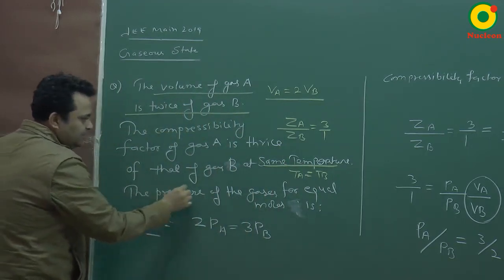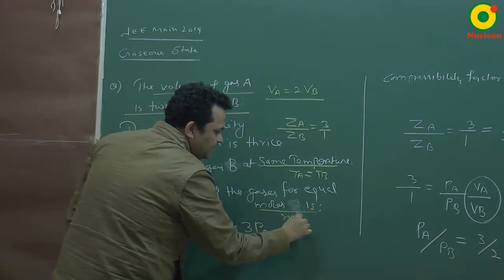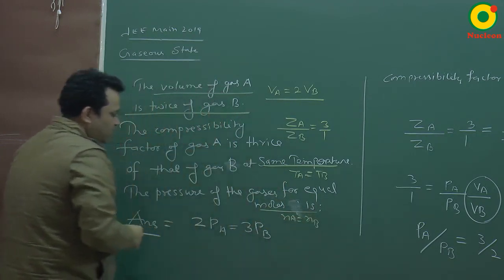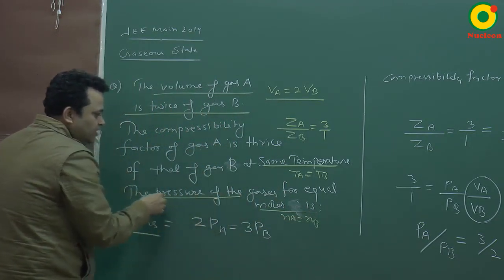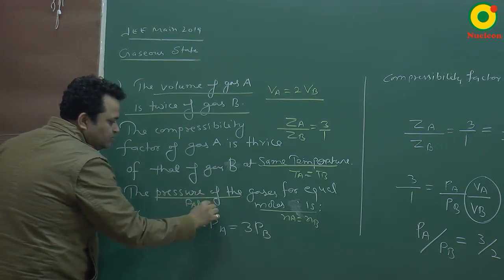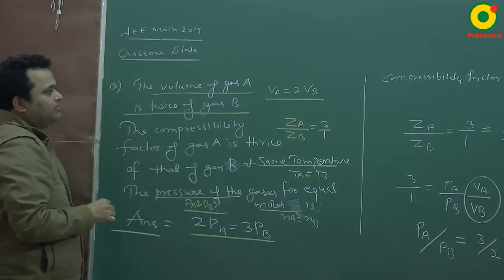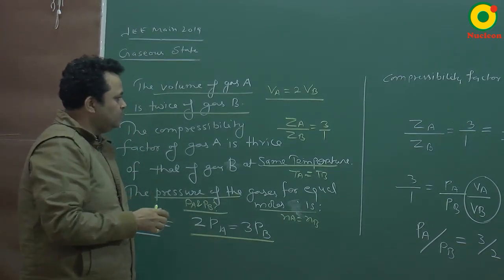So the pressure of gases for equal moles is equal, nA is equal to nB. Now it is asking what is the pressure that is going to happen, so this is the relation of the PA and the PB, and the answer is this question in the moment.